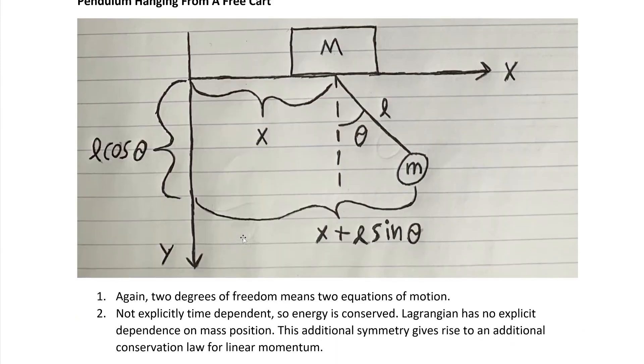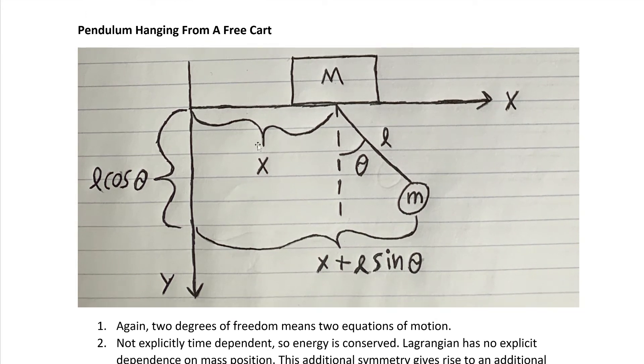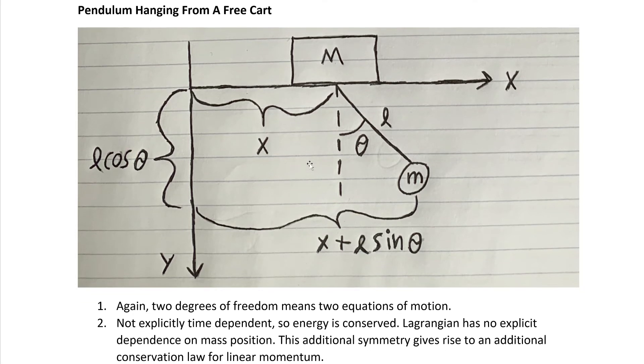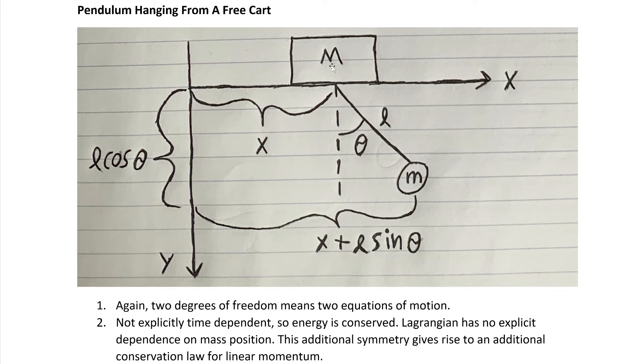Now the subject of this video is yet another permutation of this problem. The change from the last one is that we've simply eliminated this spring, so now this block is free to move. We've still got two degrees of freedom, so we'll still expect two equations of motion. However, there is a change that's actually consequential induced by the loss of the spring. And that is now, just intuitively looking at this diagram, we expect block location translation invariance.